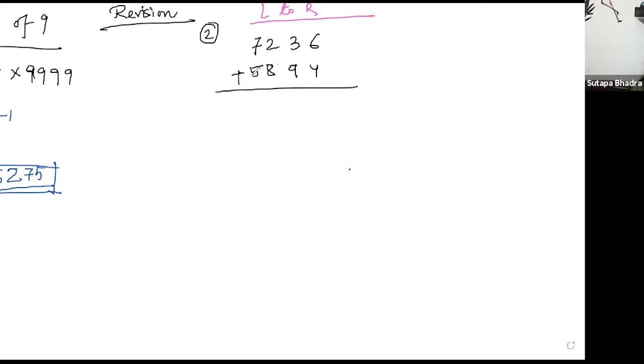I'm doing it here. 7 plus 5 is 12, 8 plus 2 is 10, 3 plus 9 is 12, and 6 plus 4 is 10.